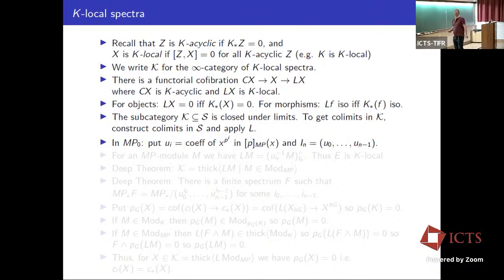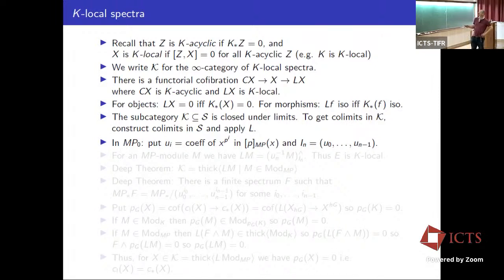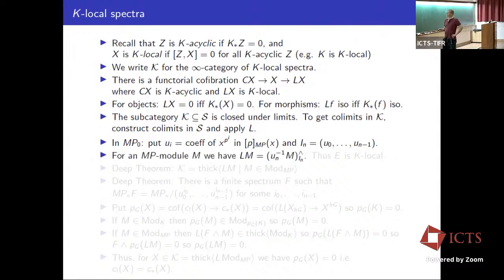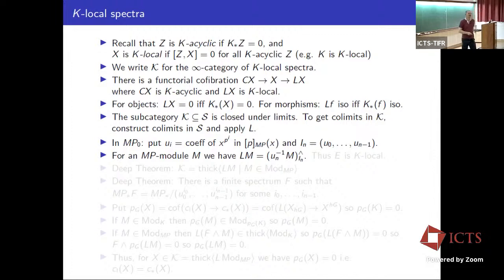It's useful to understand localization of modules over the complex cobordism spectrum MP. Recall MP has a formal group law and a P-series. The element U_i is the coefficient of x^{p^i} in that series, and I_N denotes the ideal generated by U_0 up to U_{N-2}. For a module spectrum over MP, the localization is algebraic: you invert U_N and complete with respect to the lower U_i's.